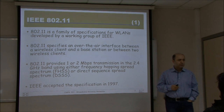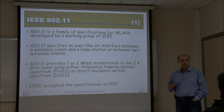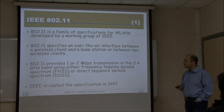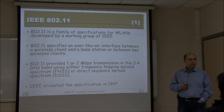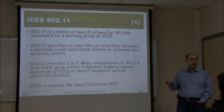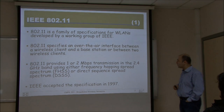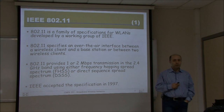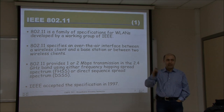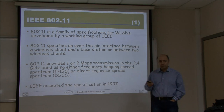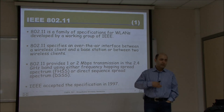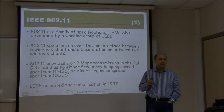802.11 is actually not a single standard, but a family of standards. The initial one was 802.11, then came variations A, B, G, N, and so on. It's a family of specifications for wireless local area networks by a working group under IEEE. 802.11 specifies an over-the-air interface between a wireless client — like a laptop, PDA, or smartphone — and a base station, which in wireless LAN we call an access point. It's also possible to have 802.11 between wireless nodes in an ad-hoc network without any access point.